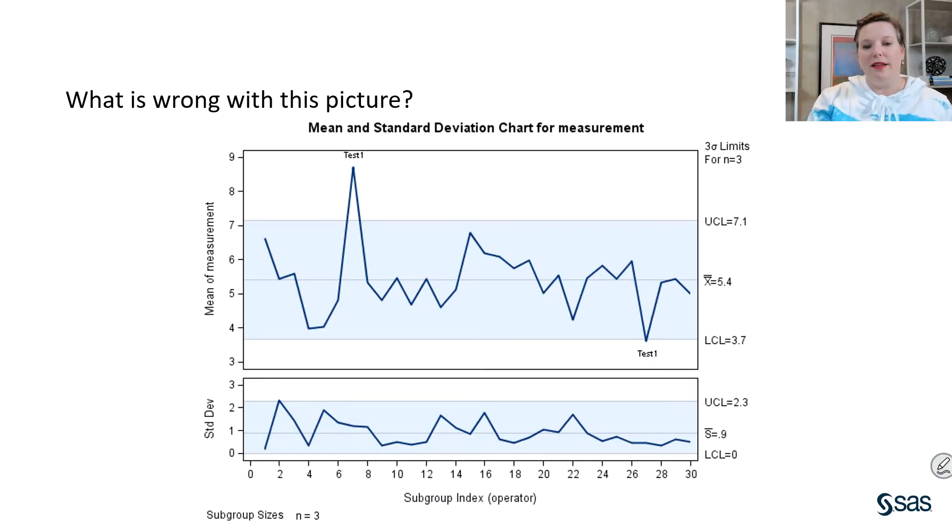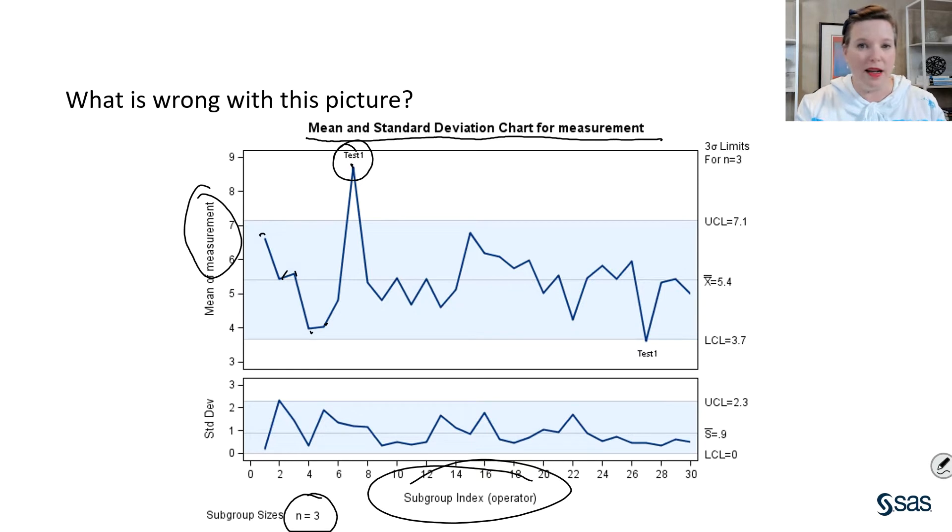If you take a look at the screen that I'm showing you right now, what's wrong with this picture? You'll notice that what we have are mean and standard deviations for measurements. We've got subgroups of size 3. Everything seems okay, right? You've got your means at subgroup size 3, there's a test, and you say, oh, this process is not in control. There's one problem with this, however. The subgroup index is not a sequential variable. It's a categorical variable. It's operators. That is not an appropriate situation for a Shewhart chart. So what do we use instead?